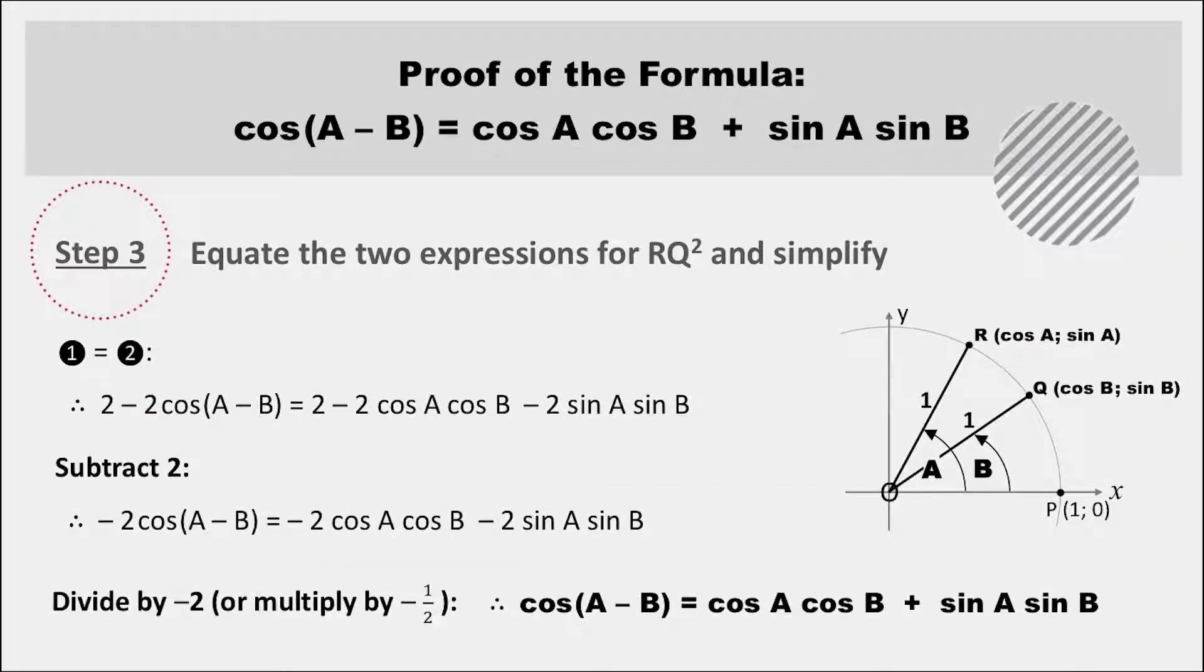The third and final step of the proof is now to equate these two expressions. Once you've equated them, subtract 2 from both sides and then finally divide both sides by minus 2, which leaves you with this equation, the formula for cos of (A minus B) we set out to prove.